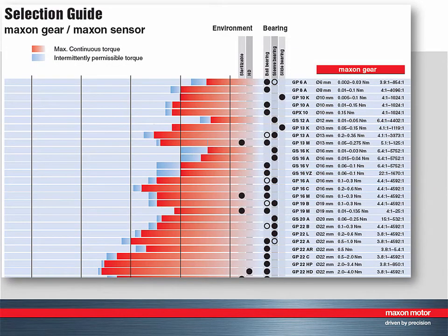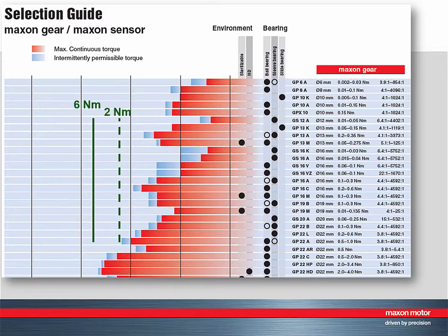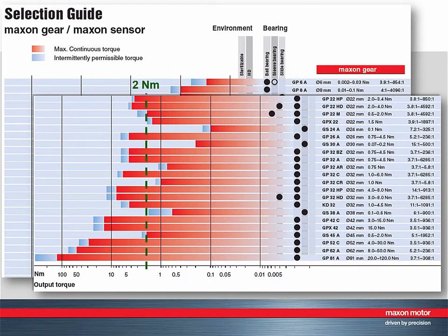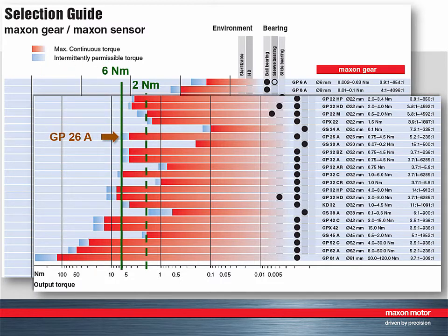A good overview of the rated torque of Maxon gearheads is offered by the selection guide in the catalog. The red bars indicate the torque capabilities with respect to the scale at the bottom. The smaller gearheads at the top of the list are too weak — neither continuous nor maximum torque ratings are sufficient. In the lower part of the selection guide one finds the larger and stronger gears with sufficient continuous torque. The maximum torque of the application is quite large, and we have to move down the list to the GP26A for the first gearhead type to fit.